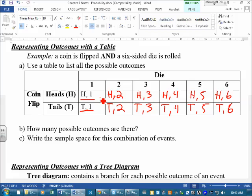So it's asking here, how many possible outcomes are there? Well, there's one, two, three, four, five, six, seven, eight, nine, ten, eleven, twelve. There's twelve of them.